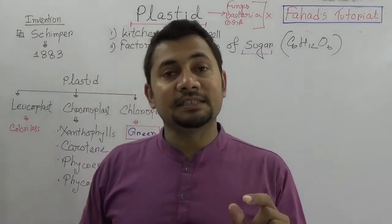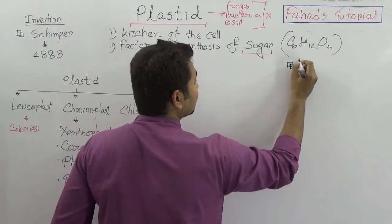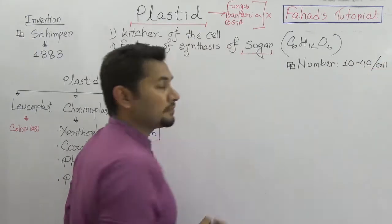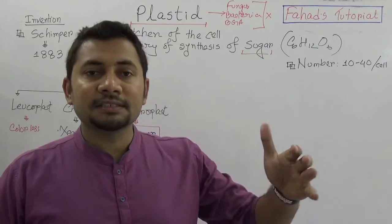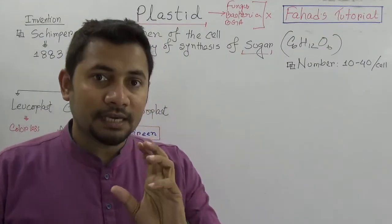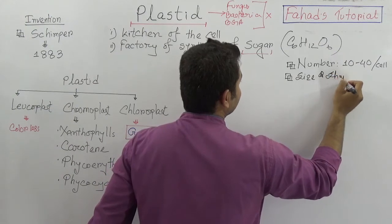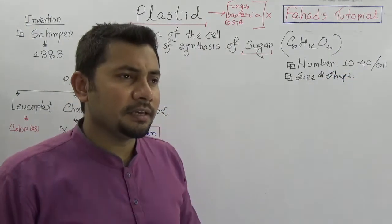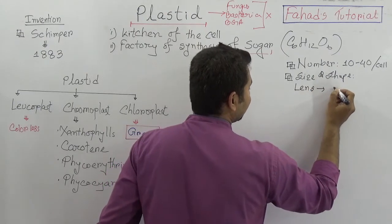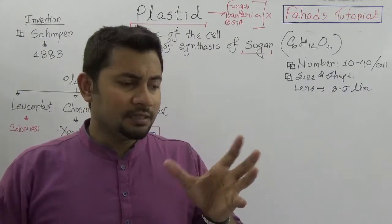If the question is how many plastids can be present in a cell, on average there can be 10 to 40 plastids per cell. In higher plants there can be 40 or even 50 plastids per cell. In terms of size and shape, plastids can be lens-shaped, with a length of 3 to 5 micrometers. They can also be star-shaped or cylindrical.